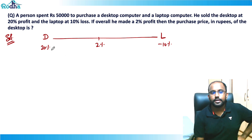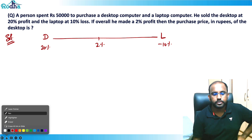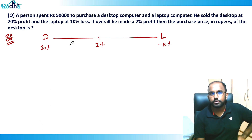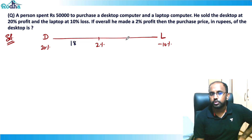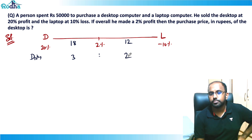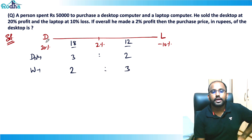So what is the distance ratio here? This distance is 18 — from 2% to 20% — and this distance is 12 — from minus 10% to 2%. So the distance ratio is 18 to 12, which simplifies to 3 to 2. So the weight ratio will be 2 to 3.